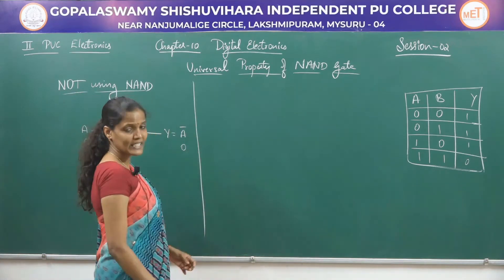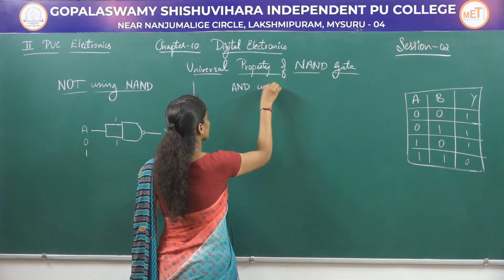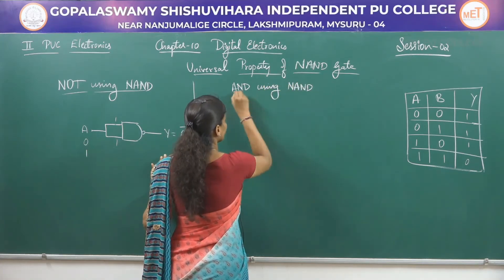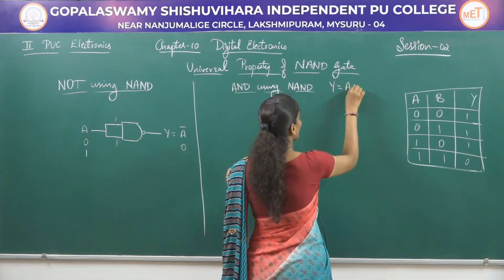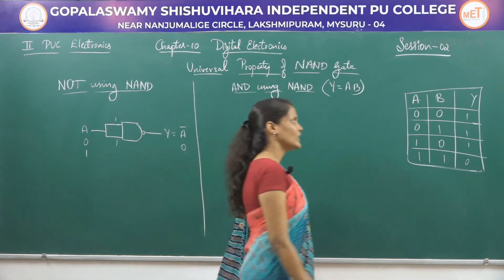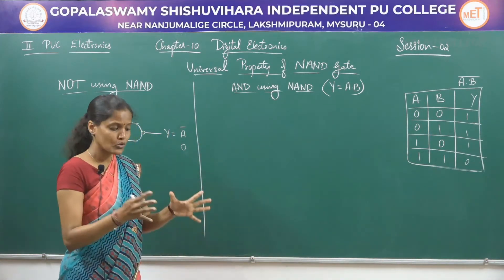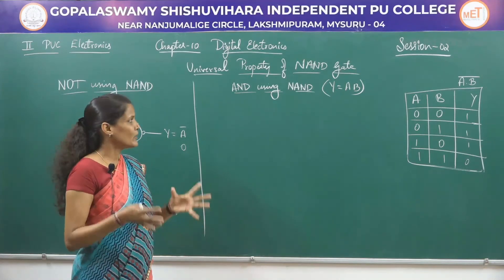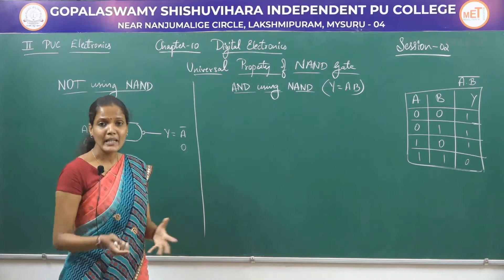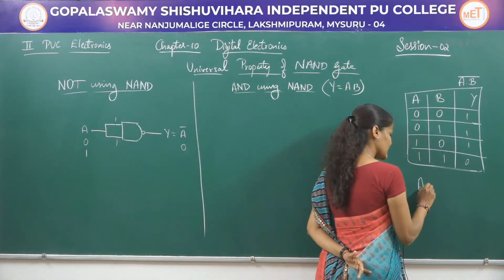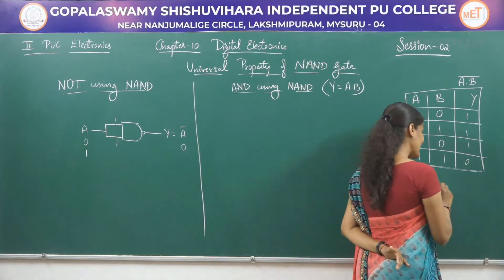Now let us see how to realize an AND gate using NAND only. We have to construct a circuit which gives output Y = A·B using only NAND gates. The output of a NAND gate is A·B whole bar. We know that a double bar is equal to A, and B double bar is equal to B — that is, double complement gets cancelled. So A·B double bar will be equal to A·B, because if we consider A·B as a single term, double complement cancels.